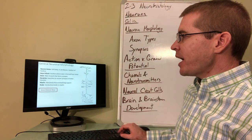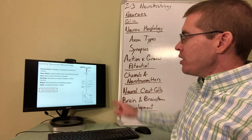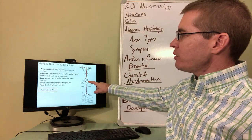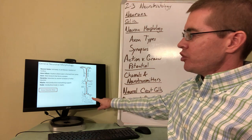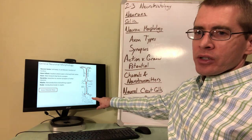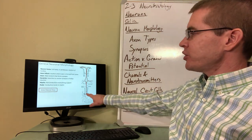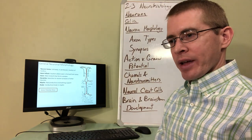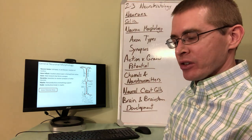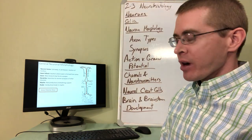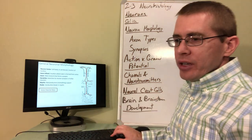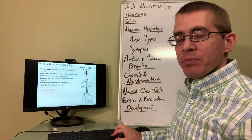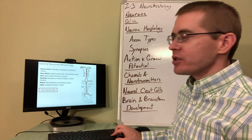The action potential wave starts in a dendrite, travels through the soma to the axon, and eventually reaches synapses with other neurons. At those synapses it releases neurotransmitter that will then activate or inhibit the target post-synaptic neurons.